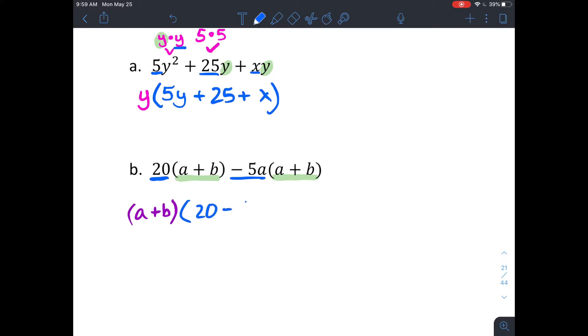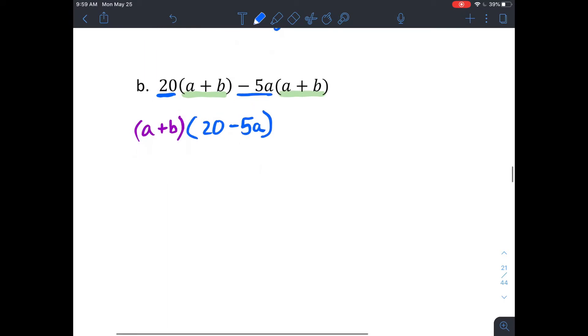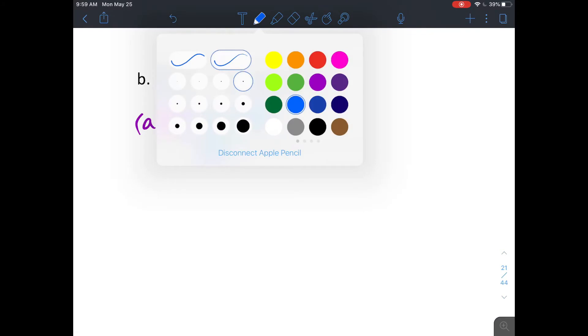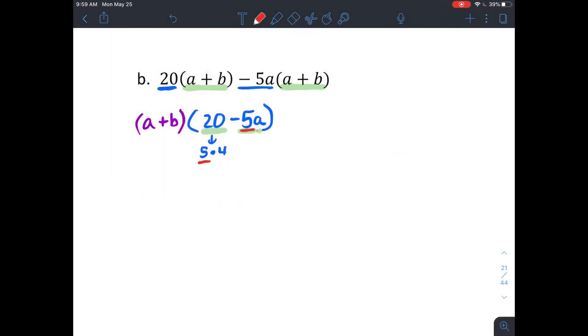And then actually 20 minus 5a still shares a common factor that I could factor out, because 20 is 5 times 4. So you could factor a 5 out of each of those, which I'm just gonna go ahead and put out in front. So I'll have 5 times my quantity a plus b. And then once I've factored that 5 out, 20 divided by 5 is just gonna leave me with 4 minus 1a.